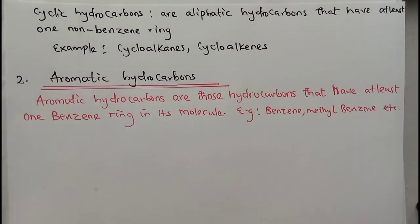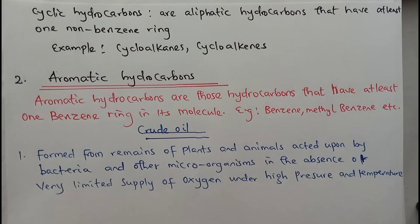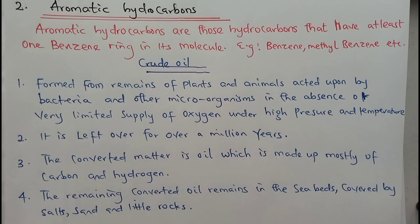Let's look at the major source of hydrocarbons: crude oil. Crude oil is formed from the remains of plants and animals, acted upon by bacteria and other microorganisms in the absence or very limited supply of oxygen, under high pressure and temperature. This is a process that has taken a long time — about a million years. Plants and animals are made up of carbon and hydrogen; in the absence of oxygen, these converted forms become oil, made up mostly of carbon and hydrogen. The remaining converted oil goes down under the seabed, covered by salt, sand, and rock.